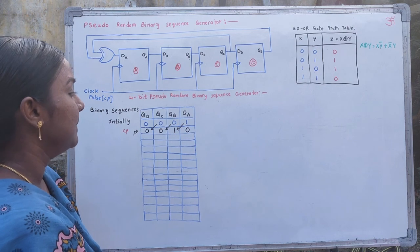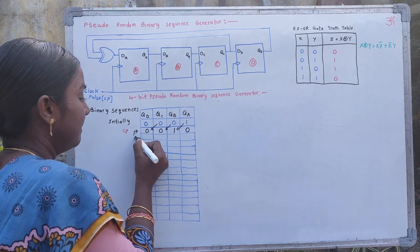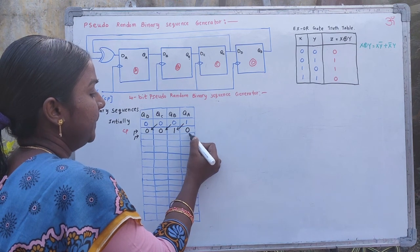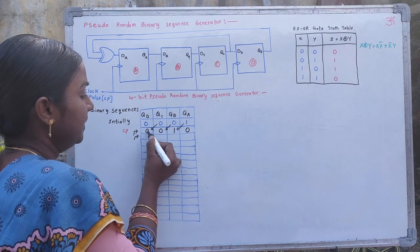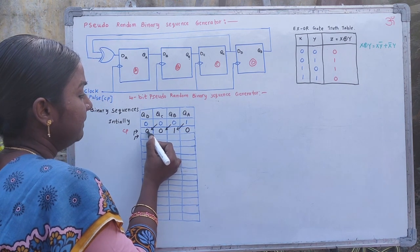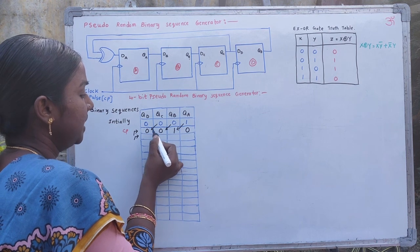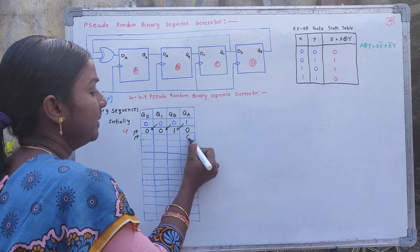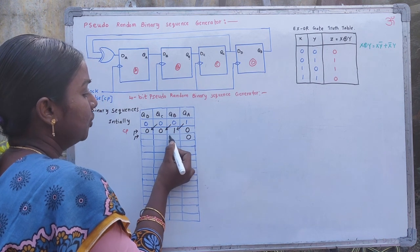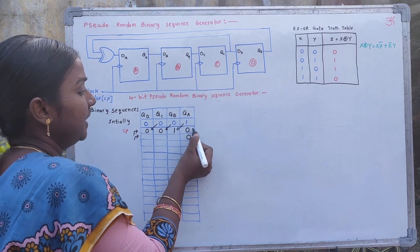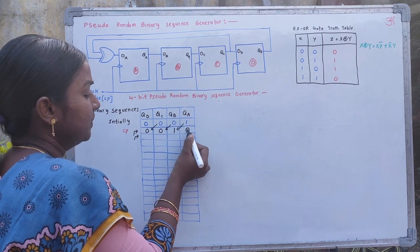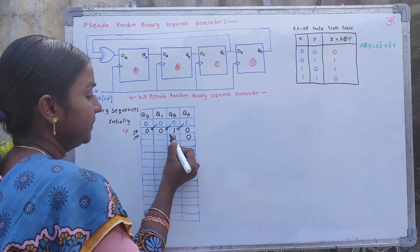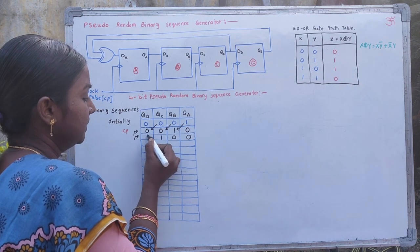In this similar fashion, after applying the second clock pulse, the QA bit is decided by the previous outputs of QC and QD. Again, 0, 0 means QA will be 0. QB, QC, QD are the previous bits of QA, QB, QC respectively, giving 0, 1, 0.